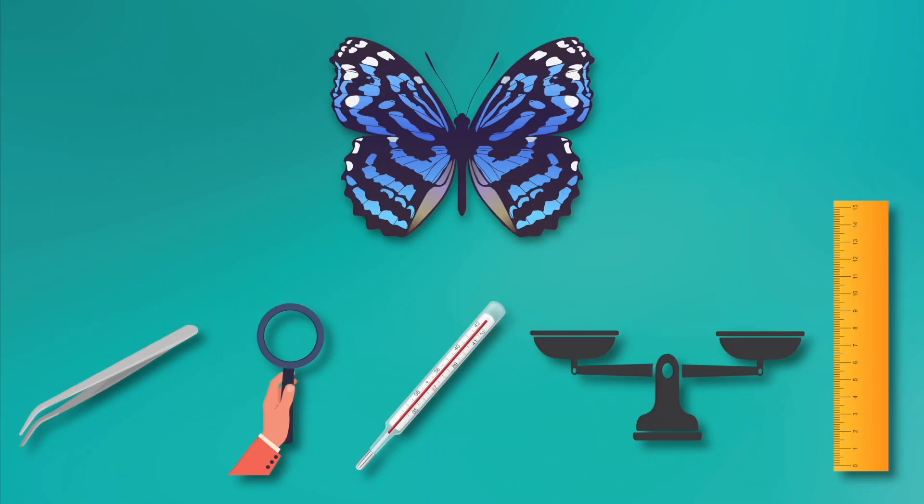Now that we know the name of each tool and how they turn our senses into super senses, let's practice picking the right tool to use. Let's say I found a butterfly. It has the most beautiful color and patterns on its wings, but I can't quite see all of the details. If I want to have super sight to see small details on the butterfly wing, I would use the hand lens.